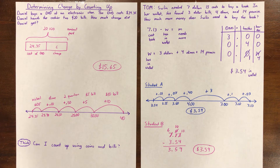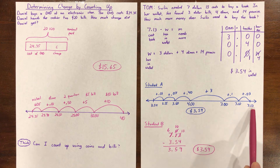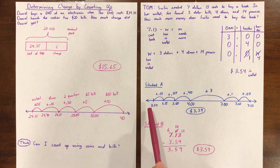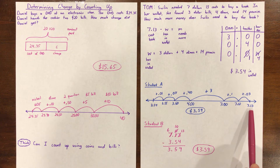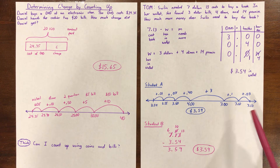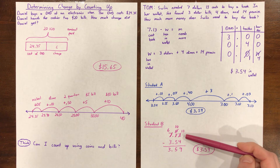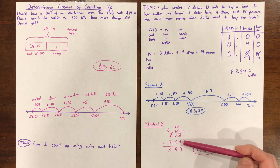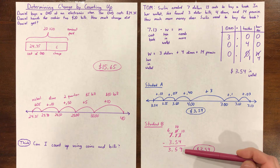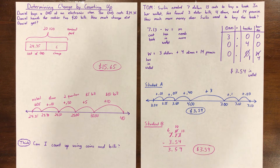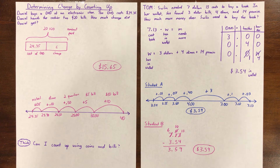On the number line, we start at the amount that she has and we count up to find the difference between the amount that she has and the amount that the book costs. With subtraction, we just use the standard algorithm — this is the amount that the book costs, we subtract the amount that she already has, and that tells us the amount that she needs. So I'm curious: as you're working today, why might you want to choose one or the other of these strategies? Go ahead and explain your thinking out loud.